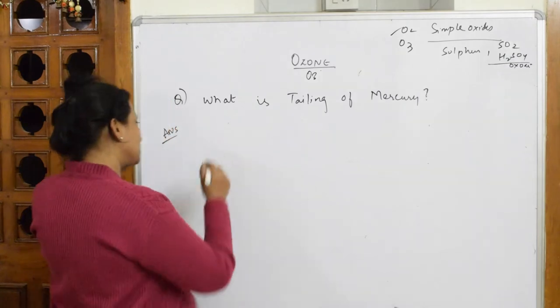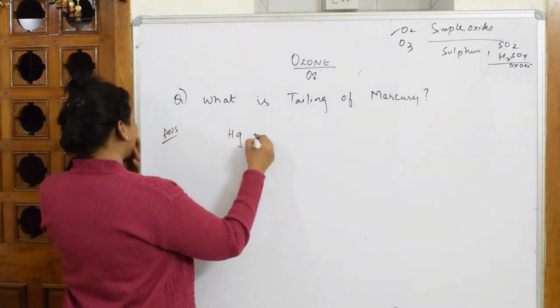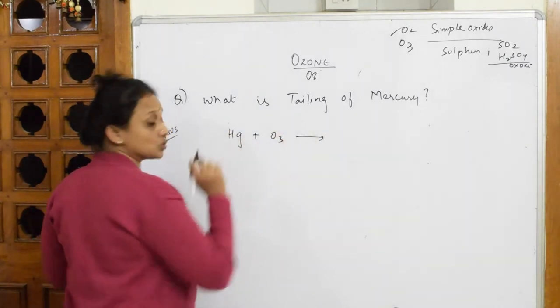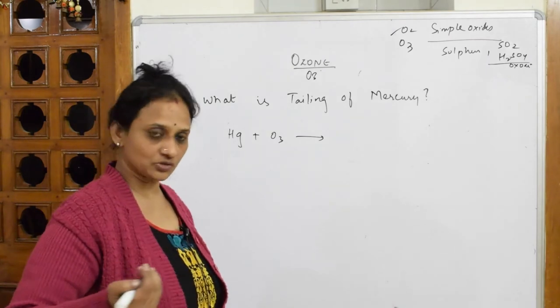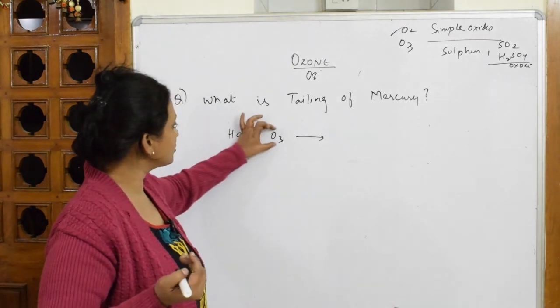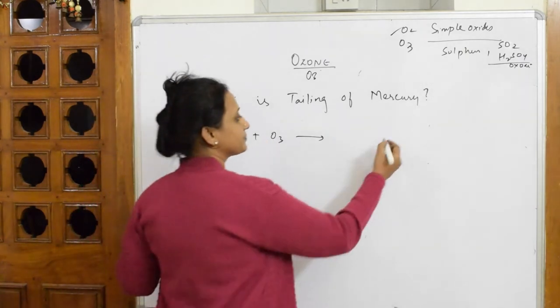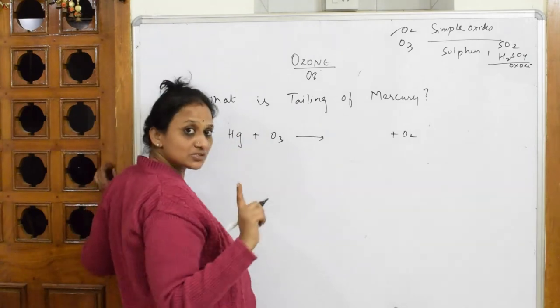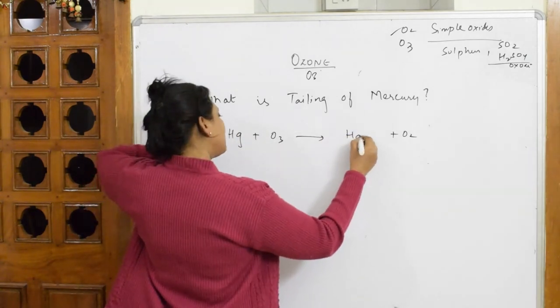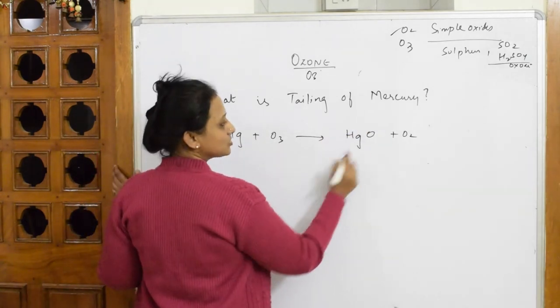When you add ozone to mercury—I take Hg and add O3—ozone decomposes and dissociates into oxygen plus nascent oxygen. First it releases oxygen, then mercury combines with the nascent oxygen.